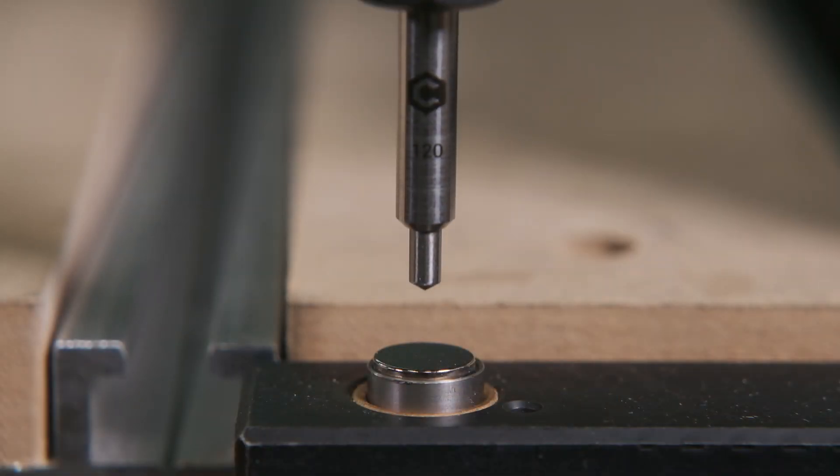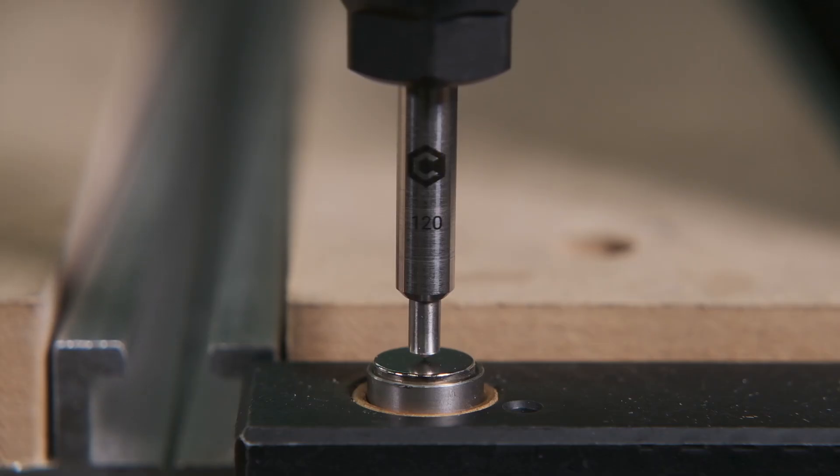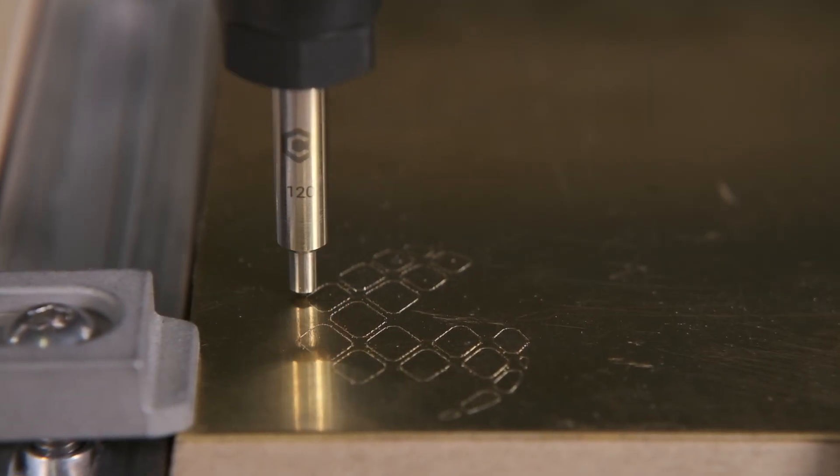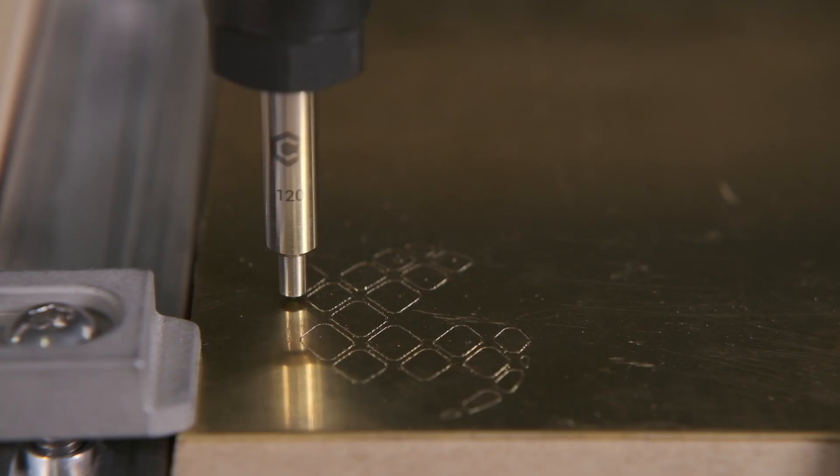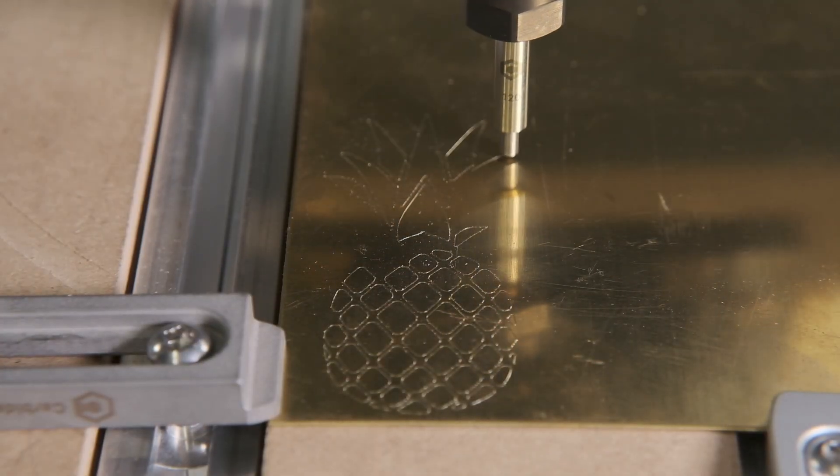A 120-degree tip is a good general-purpose geometry for most metals and plastics, since it won't gouge into the surface as much and raise a burr. We offer MC Etcher in both 90 and 120-degree tip angles either individually or as a set. You can find them now on our store website, shop.carbide3d.com.